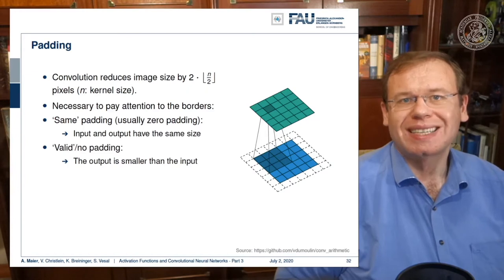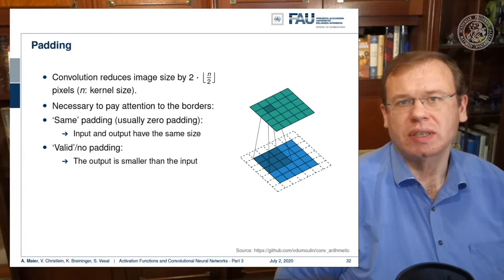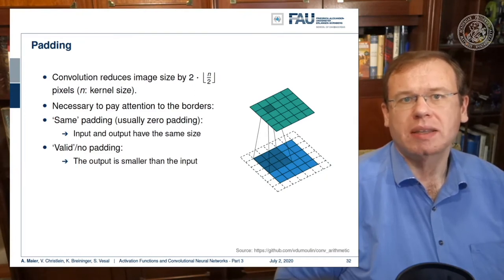One way of dealing with this is to reduce the size of the feature map in the next respective layer. You can also use padding. What many people do is just zero padding, so all values that have not been observed are set to zero, and then you can remain in the same size and just convolve the entire image. There are also other strategies like mirroring, but zero padding is probably the most common one.